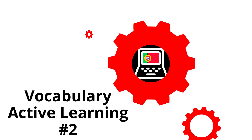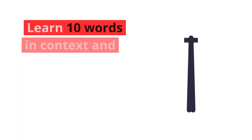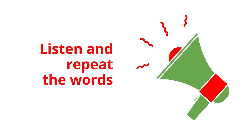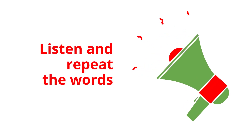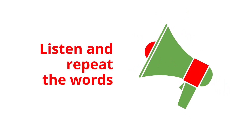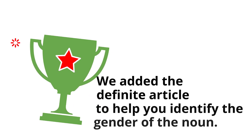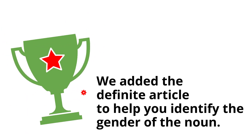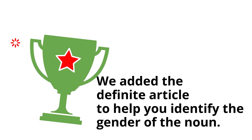Vocabulary Active Learning No. 2. Learn 10 words in context and actively practice them. Listen and repeat the words. We added the definite article to help you identify the gender of the noun.